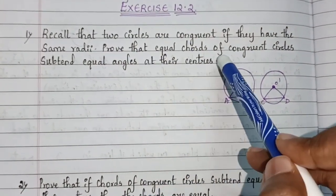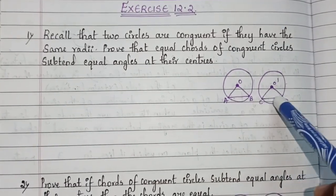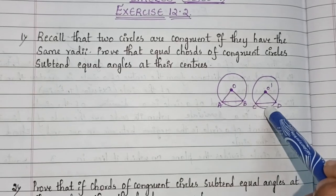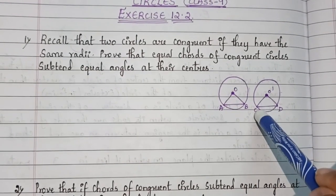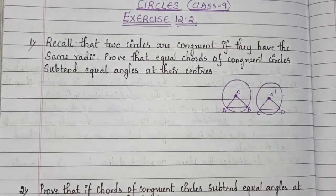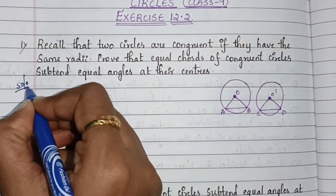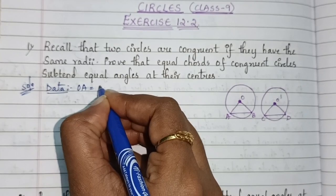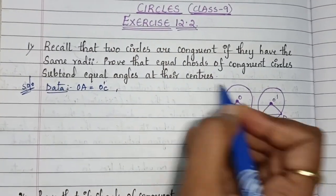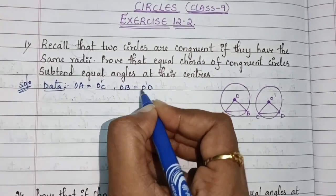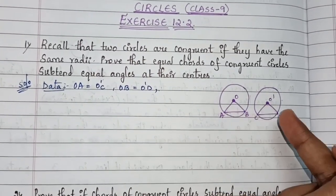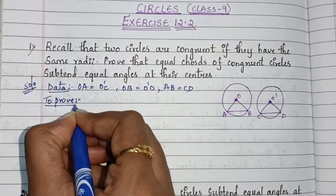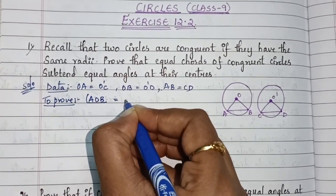What we need to prove: equal chords of congruent circles — AB equals CD — subtend equal angles at the center, meaning angle AOB equals angle CO'D. Given data: OA equals O'C, OB equals O'D, and AB equals CD, since these are equal chords.